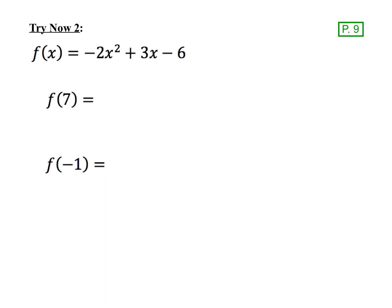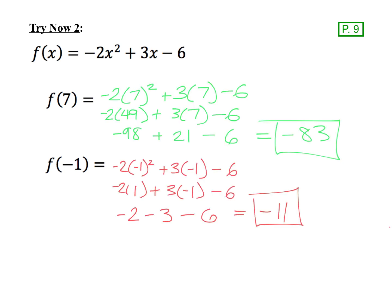Here's a try-now problem for you to try on your own. Go ahead and pause the video and give this problem a try, then when you hit play again I will have the answers posted. Here are your answers: f(7) should be equal to negative 83, and f(-1) is equal to negative 11.